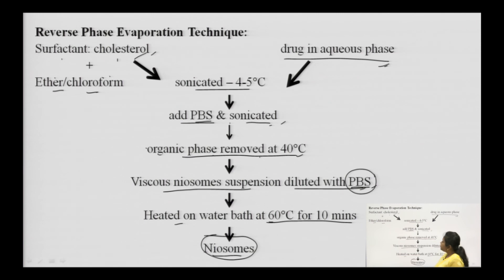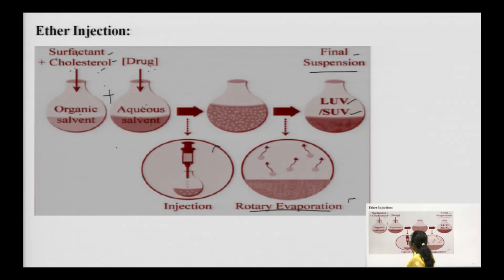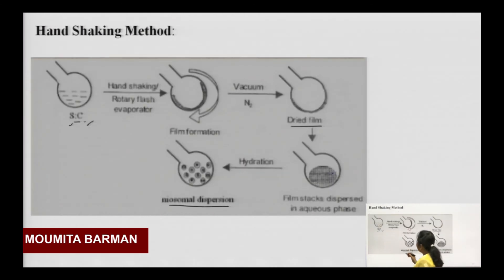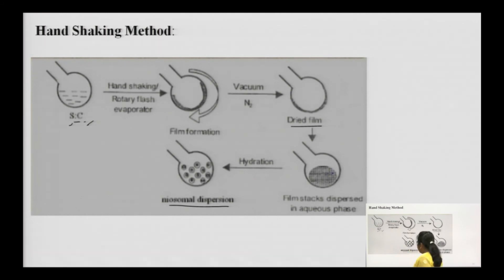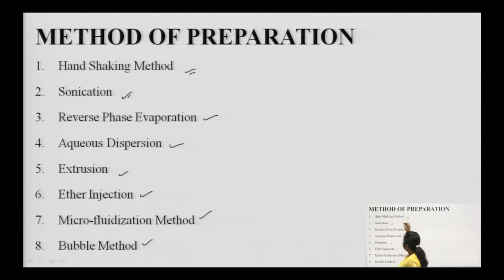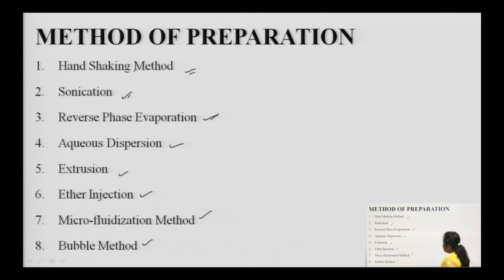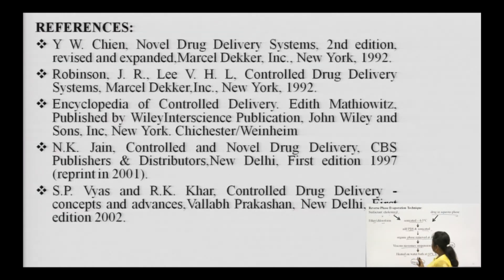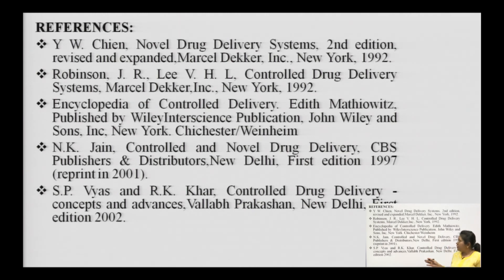So this is the reverse phase evaporation technique. That was ether injection - where aqueous solution is injected into ether solution. The hand shaking method uses a rotary evaporator to form a film, and after hydrating the film you get neosomal dispersion. These are the first three methods of preparing Neosomes - hand shaking, sonication, and reverse phase evaporation, and ether injection. These are also the references for your Neosomes. Thank you so much.